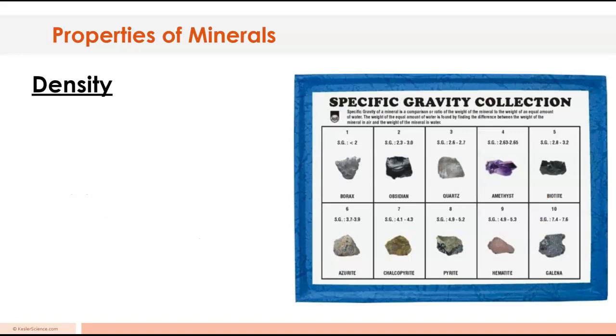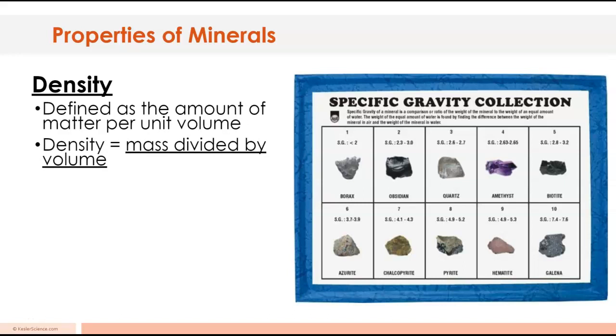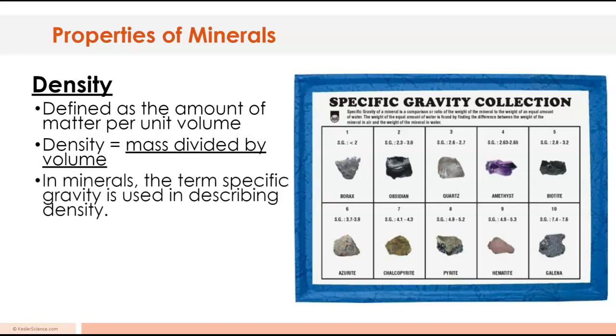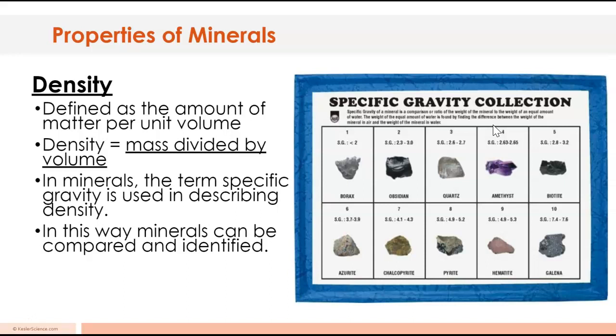Next up is density. Density is kind of like the heaviness of it. If you pick up a rock it's dense, it's heavy for its size. If you pick up a piece of styrofoam it is not heavy for its size. That's pretty much what it is: heavy for its size, the amount of matter per unit of volume. The way you find density is you take its mass, which is kind of like its weight, and you divide it by its volume. You can weigh it and test the volume and come up with the density and then you can look at a chart here. In minerals the term used is called specific gravity in describing density. Go ahead and hit pause and copy down density.